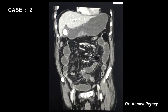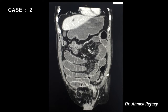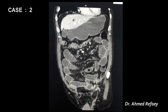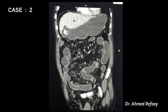Coronal reconstructed images for the same patient demonstrate the incarcerated left inguinal hernia with marked proximal dilatation of the small bowel and collapse of the distal ileal loops. The proximal small bowel loops show normal wall enhancement and thickening, consistent with the axial findings.